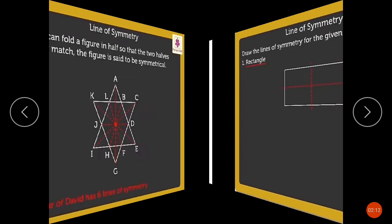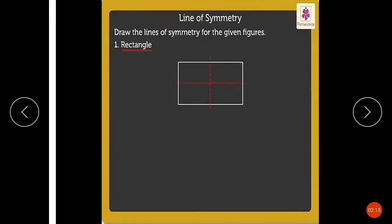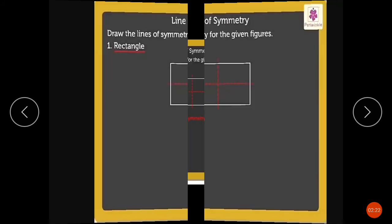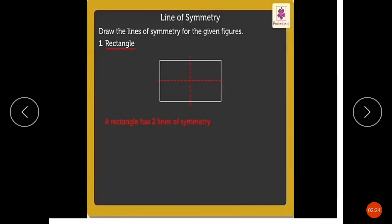Next example: draw the lines of symmetry for the given figure. اب یہاں بھی ہمارے پاس ایک rectangle shape ہے جس کو ہم line of symmetry سے half کریں گے. So these two lines will divide the rectangle in half. A rectangle has two lines of symmetry.